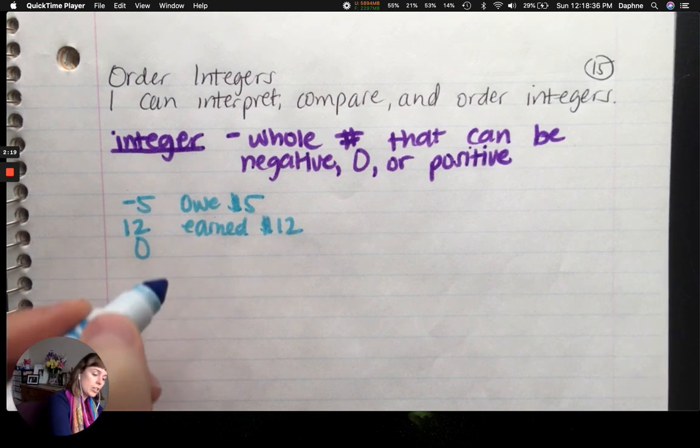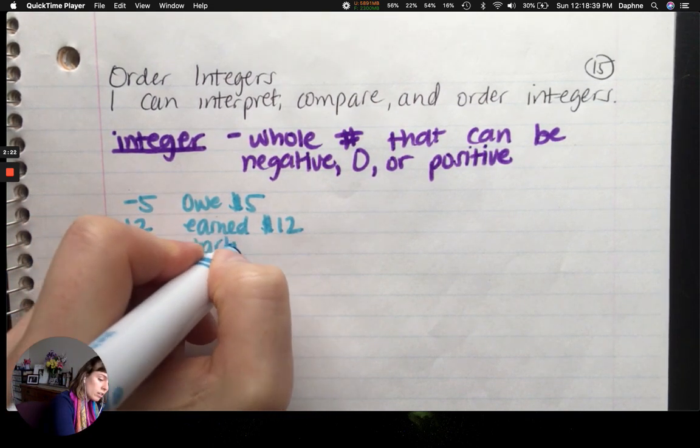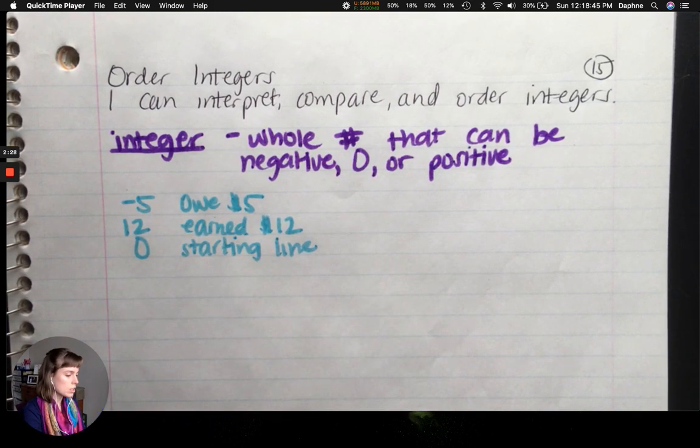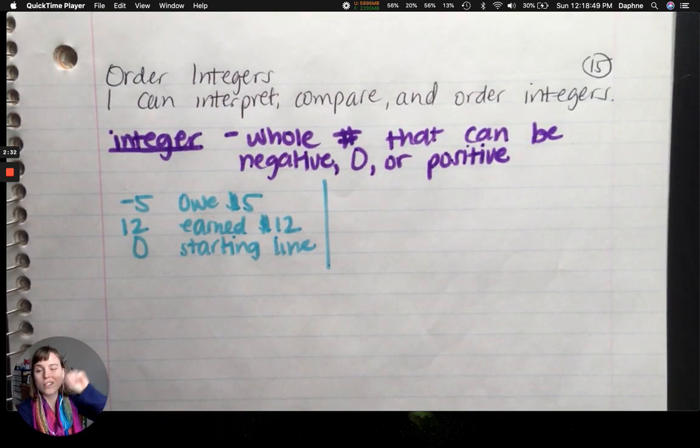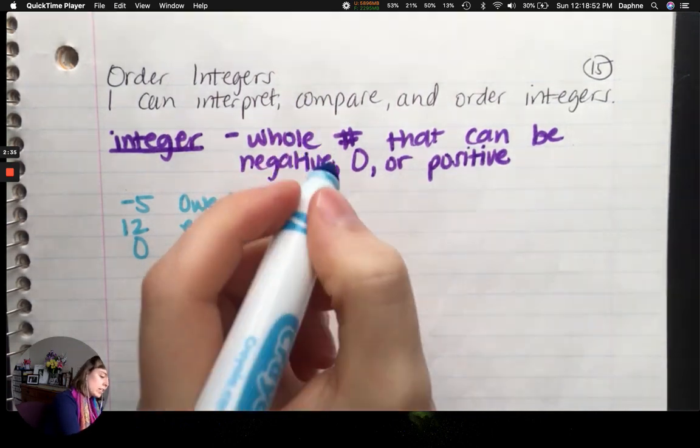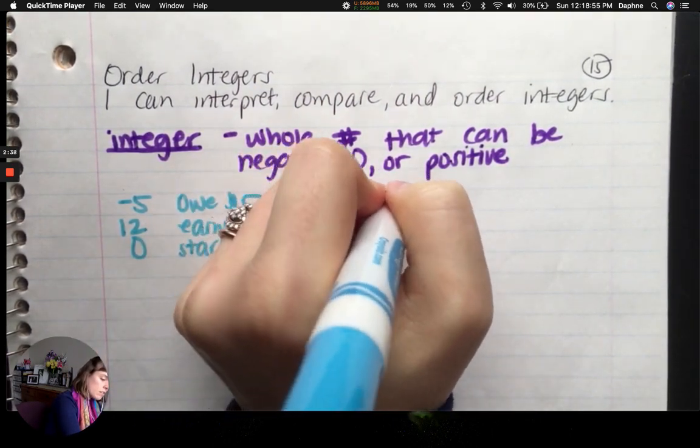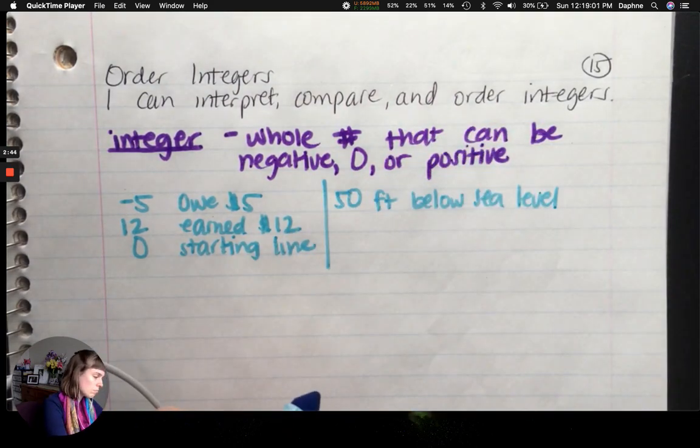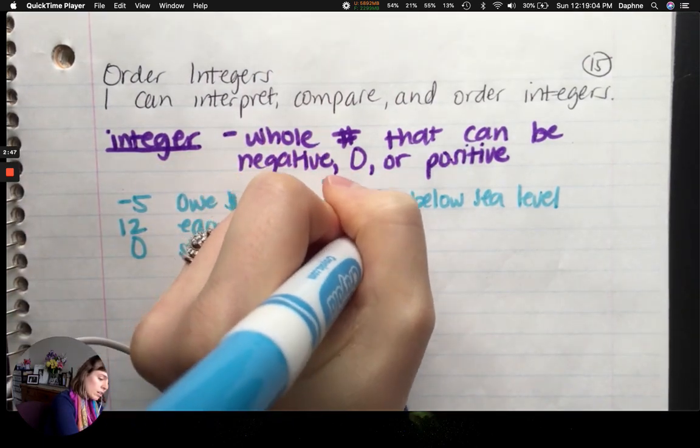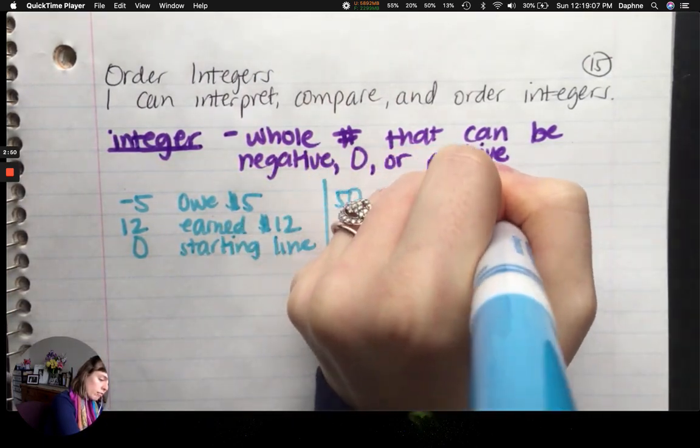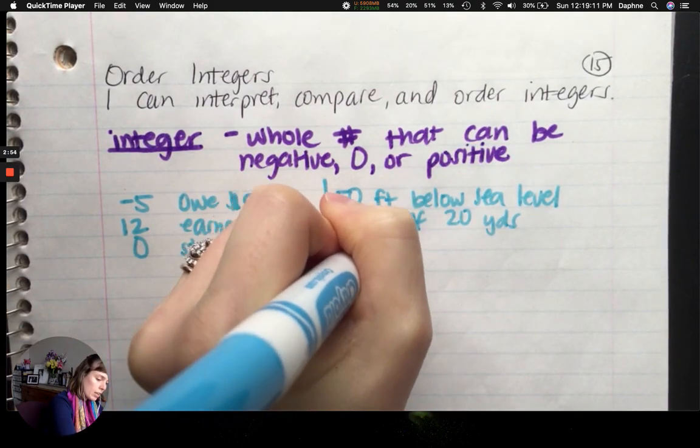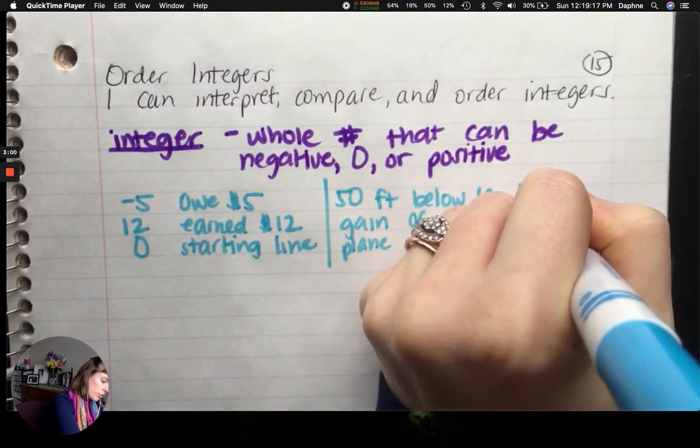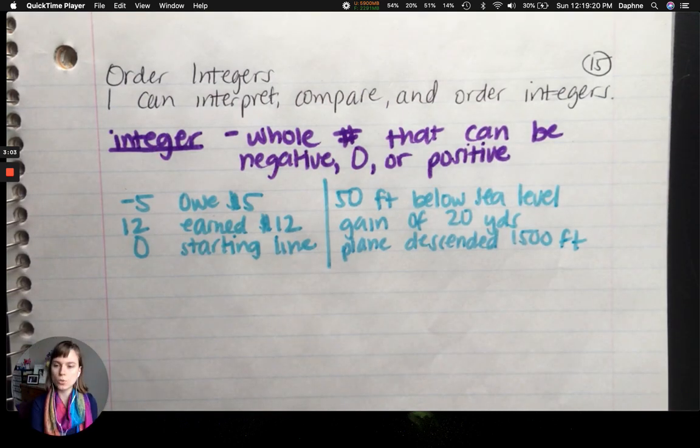What could zero mean? If you're in a distance thing, zero could be the starting line of a race. And then what if we go backwards? What if we write out the interpretation and you have to tell me what the integer is? What integer could represent fifty feet below sea level? What integer could represent a gain of twenty yards, say in a football game? And what integer could represent a plane that descended fifteen hundred feet?